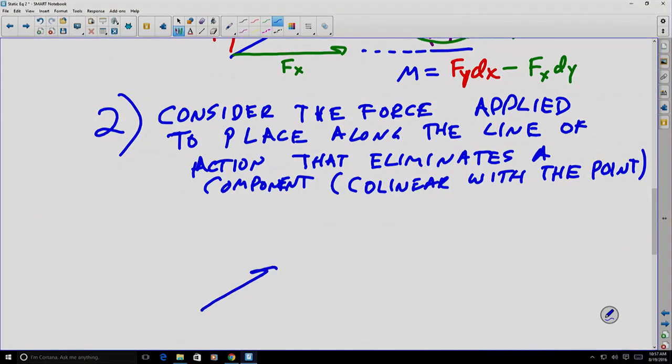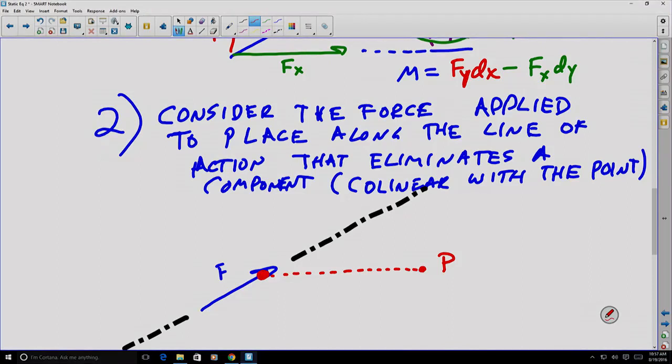If I consider some force, here's my force, and I have a line of action for that force. We can actually consider the force to be applied anywhere along that line of action, and it doesn't change how it creates a moment. Any force applied anywhere along that line of action is going to create the same moment. Well, if I consider my point P here, what I can do is I can take the force and line it up and apply it at a point that is, in this case, perfectly horizontal with P. So I'll reapply my force there.